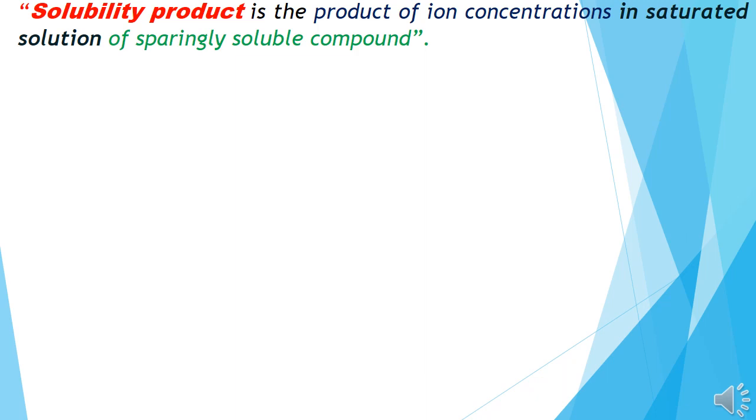Now the question arises, why is a precipitate formed? The formation of precipitate can be explained by the solubility product. What is solubility product? When we make a sparingly soluble compound, we make a saturated solution, and in that solution, we multiply the ion concentrations. The result is known as solubility product. So solubility product can be defined as product of ion concentrations in saturated solution of sparingly soluble compound, abbreviated as Ksp. 1.6 into 10 to the power minus 10 is the solubility product of silver chloride.